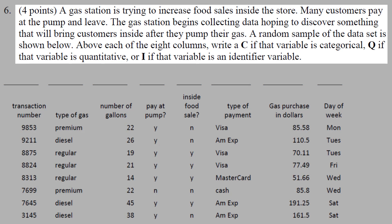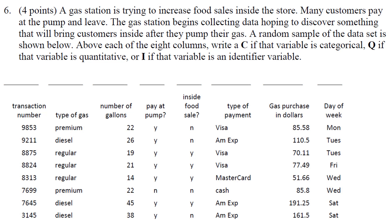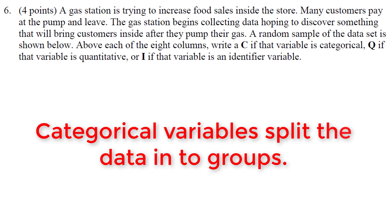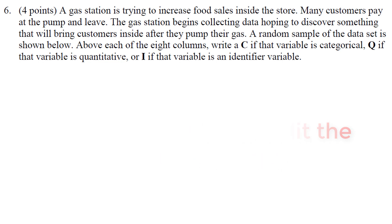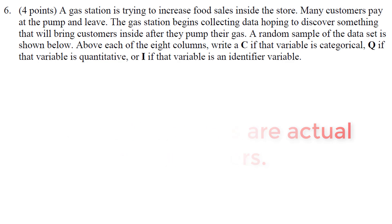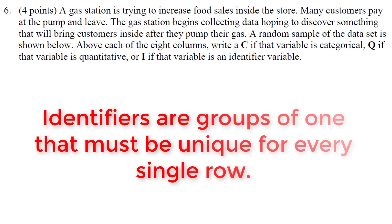For this problem we have data collected from a gas station. Let's figure out what these variables are by marking C for categorical, Q for quantitative, and I for identifier. Something categorical must break things up into groups. Something quantitative must be actual real numbers we are collecting, and something that is an identifier must break things up into groups of one — unique for each row — and it cannot and will not repeat.